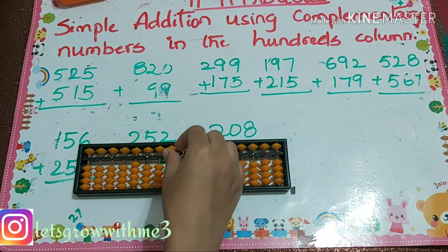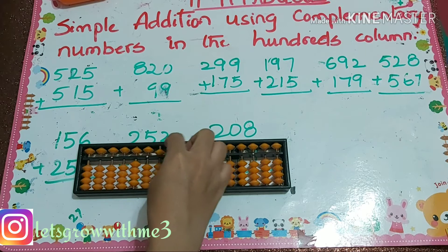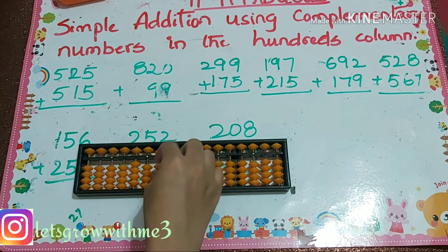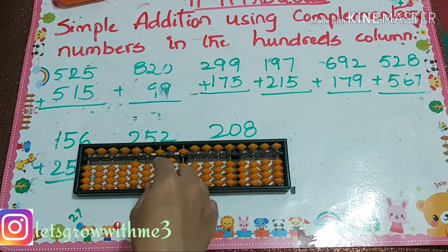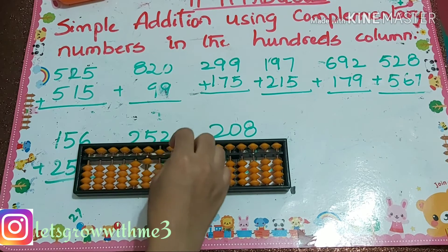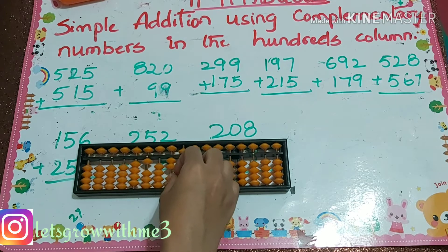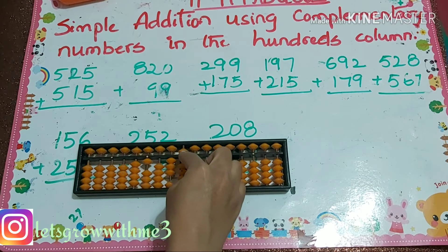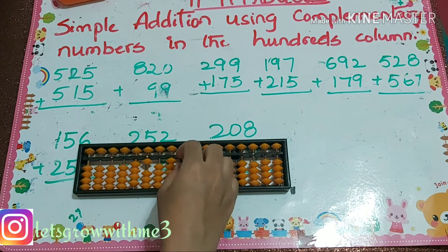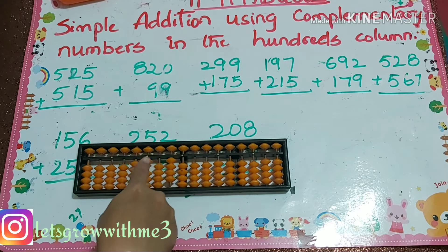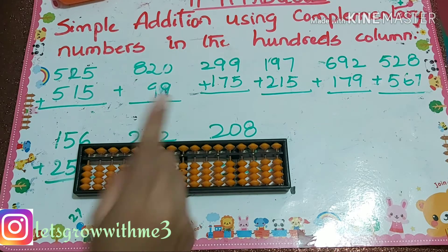Let's see a few examples. 525 plus 515: you can't add directly in the hundreds column, so I'm adding in the thousands column, then subtracting from the hundreds column. Plus 10 minus 5, plus 1. How to add 5 again — plus 10 minus 5. Your answer is 1040.